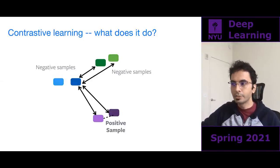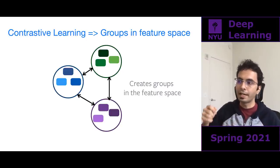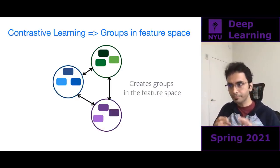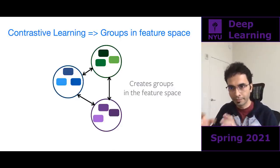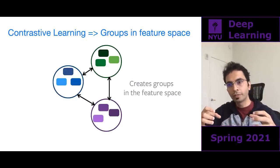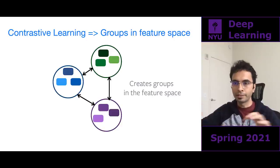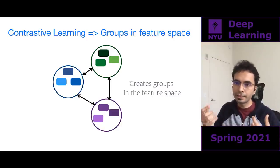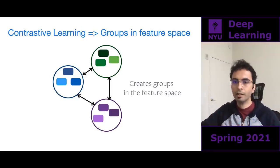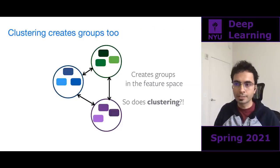In contrastive learning, you have positive samples and negative samples. You bring together embeddings from positives and repeat this for each pair. Essentially, you are creating groups in feature space — all blue embeddings from one sample's augmentations should be close to each other but far from different samples. Another direct way of doing this is clustering, because clustering naturally creates groups in feature space.